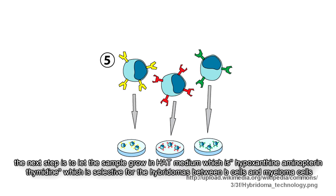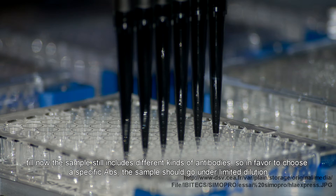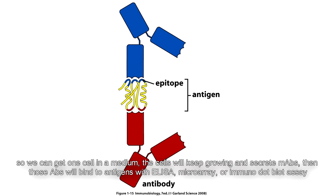The HAT medium selects for hybridomas between B cells and myeloma cells. At this point, the sample still includes different kinds of antibodies. To choose specific antibodies, the sample should go under limited dilution so we can get one cell per medium. The cells will keep growing and secrete monoclonal antibodies.